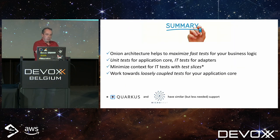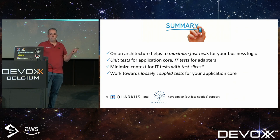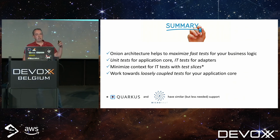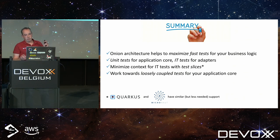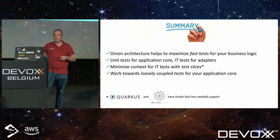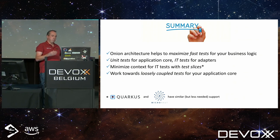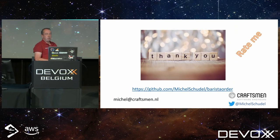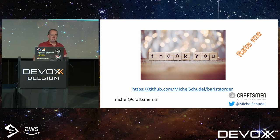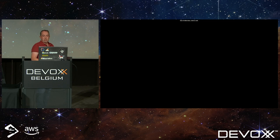To summarize: using onion architecture helps to maximize fast tests for your business logic, because you can do everything with unit tests. Unit tests for the application core, IT tests for adapters, and make sure you use test slices if possible. If you're working with Quarkus or Micronaut, they have similar concepts but you need less of them because they tend to start up faster. Work towards loosely coupled tests for your application core, because that really helps you in maintenance and shuffling things around. If you want to play around with the examples, there's a GitHub link. Please come and find me if you have any questions. Thank you very much.